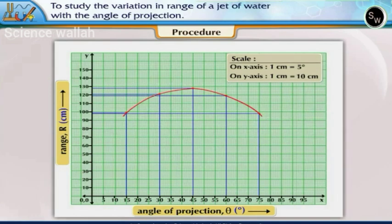The range of the water jet is maximum corresponding to the angle of projection of the jet equal to 45 degrees.